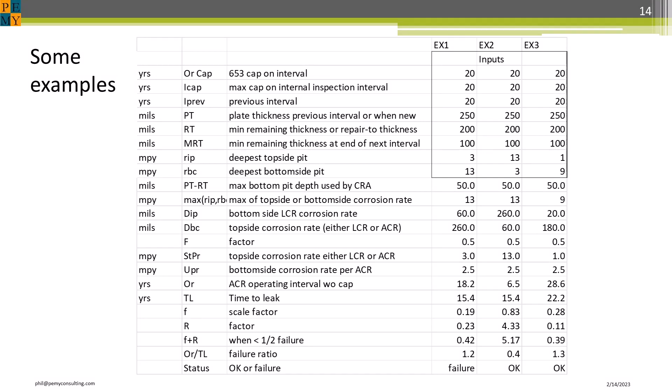Here are three examples. In all cases, we used a plate thickness, PT, of 250 mils. The repair-to thickness, RT, was assigned 200 mils, and the minimum remaining thickness, MRT, assigned 100 mils. We also assume inspection intervals to be 20 years, which is current standard practice for the most part. For an RT equal to 200, the corrosion rate would have to exceed 10 MPY to penetrate the bottom. We will talk about the metric F plus R later, but for now, just know that it must be less than 0.5 for failure.